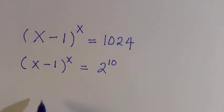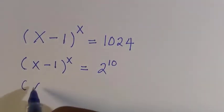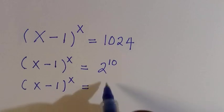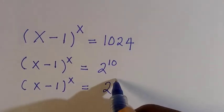Again we have (x-1)^x equals, and we break this into 2 multiplied by 5.